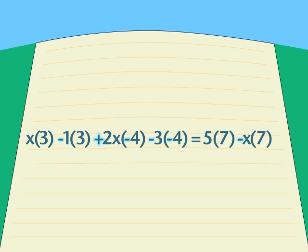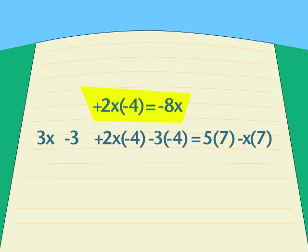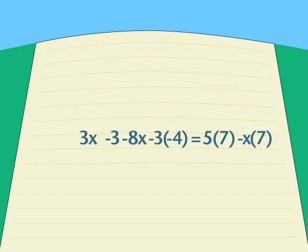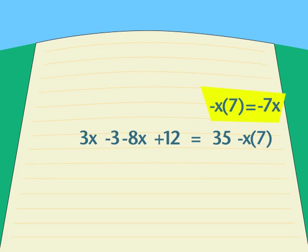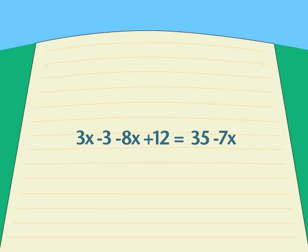Be very careful about the positive and negative signs. Notice in the middle parentheses that a positive 12 results from multiplying two negatives. We look for like terms. We combine them.